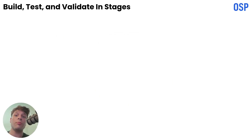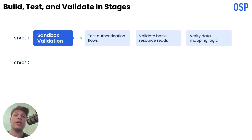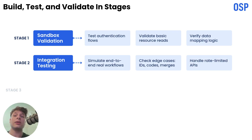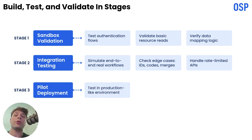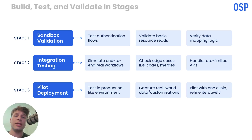Now you build, but you test in layers. Start in the vendor sandbox to validate your auth flows, basic resource reads, and mapping logic. Then move to integration testing — simulate real workflows end-to-end. Test edge cases: missing IDs, invalid codes, merged patients, and rate-limited APIs. Most importantly, pilot in a production-like environment. Sandboxes are synthetic and won't reveal local customizations or messy real-world data. Run a pilot with one clinic or department, reconcile results, and iterate.